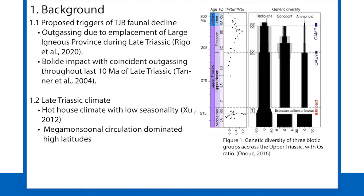It has likewise been theorized that the onset of the Triassic-Jurassic mass extinction was caused by a bolide impact about 214 million years ago. At this time, as seen in figure one on the right, there was a steady decline in genetic diversity since the bolide impact and outgassing since the late Norian.